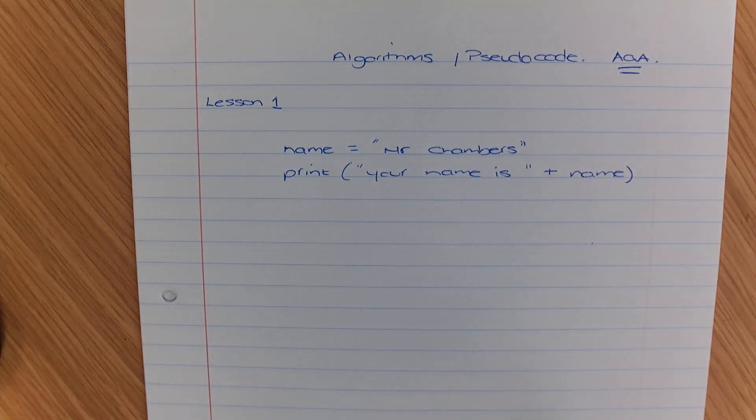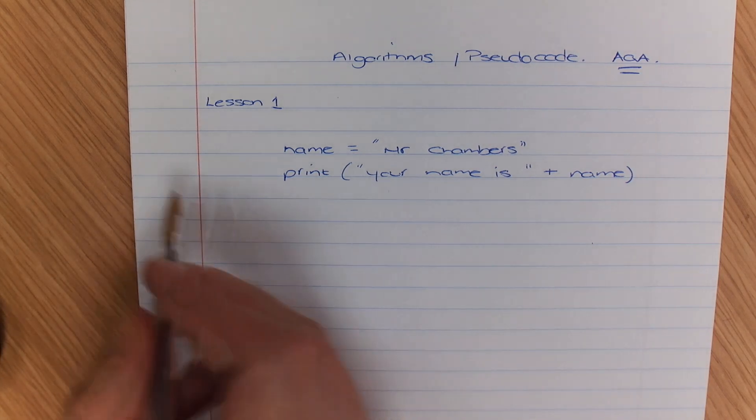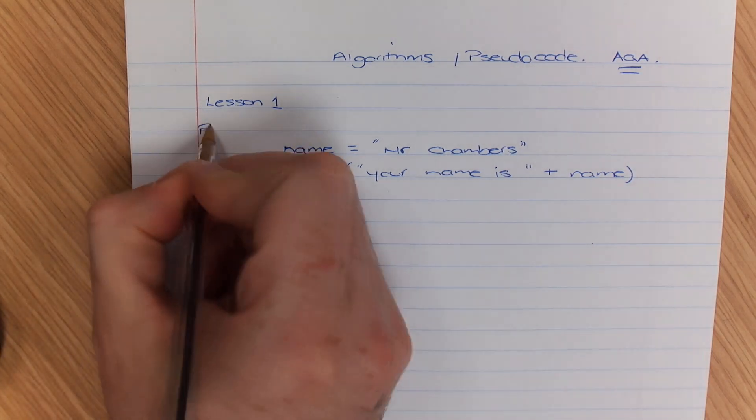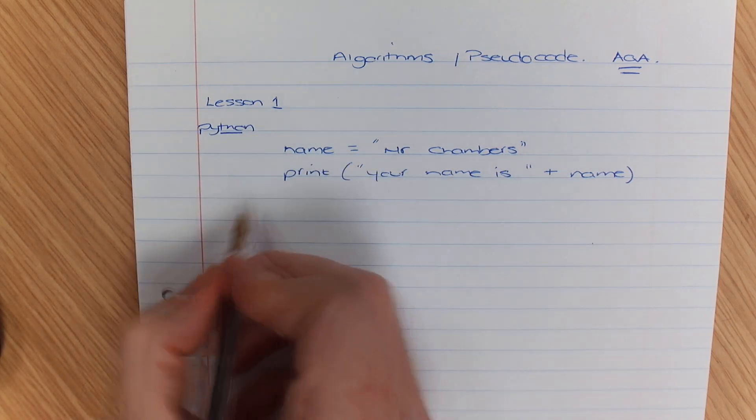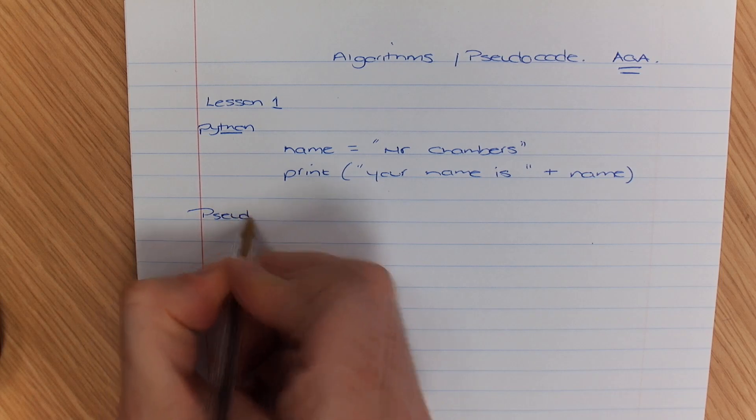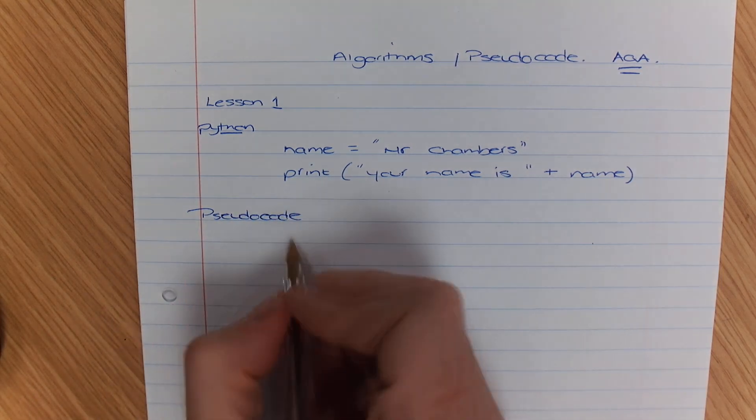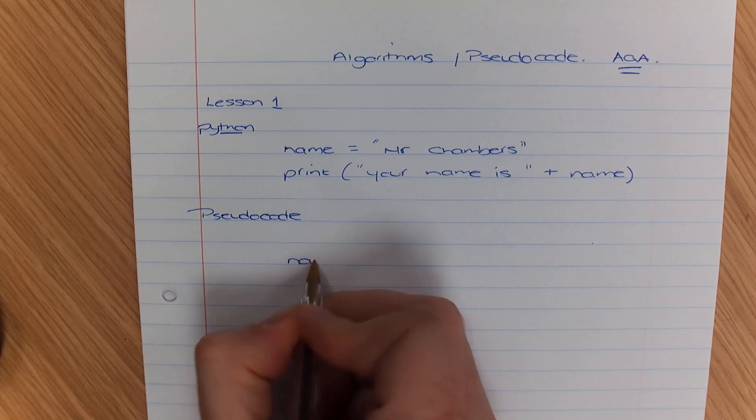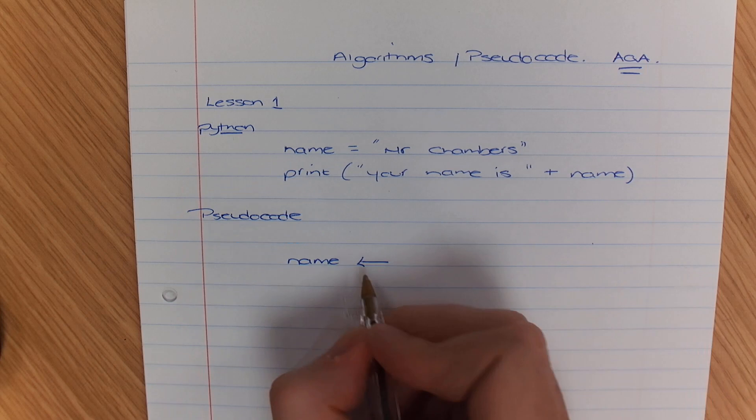Now just a reminder, if you are working in pseudocode all you're going to need to do is you're going to again declare your variable. So this is an example of Python and here is an example of pseudocode. So what we're going to do this time is we're going to say name is assigned and we use an arrow to do that.